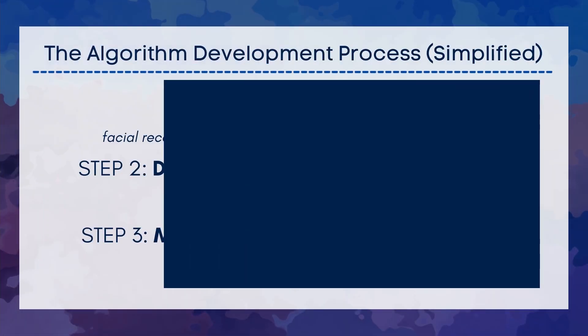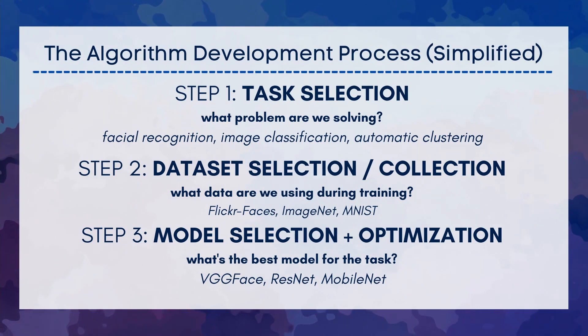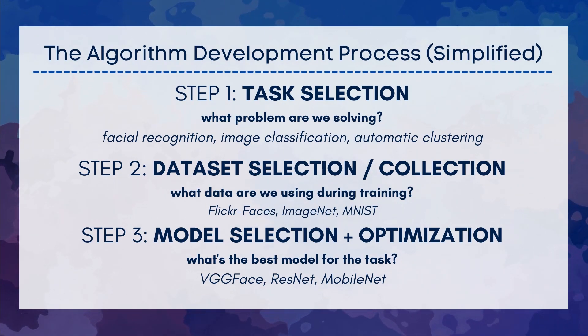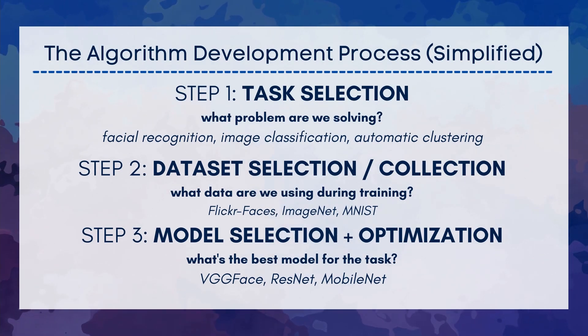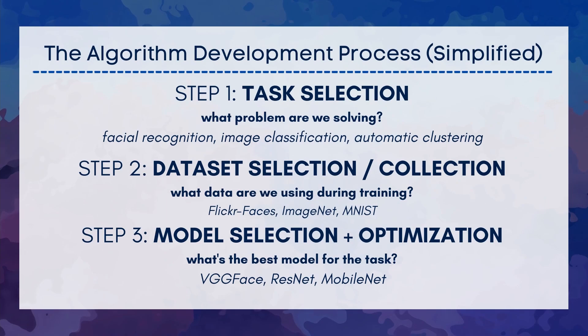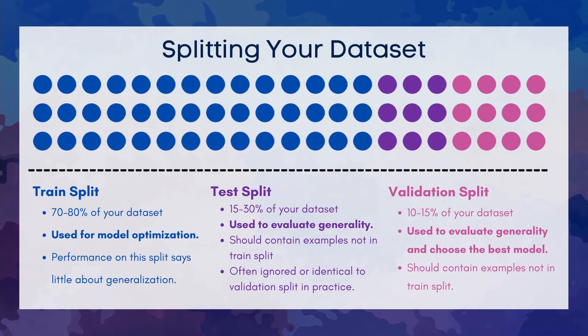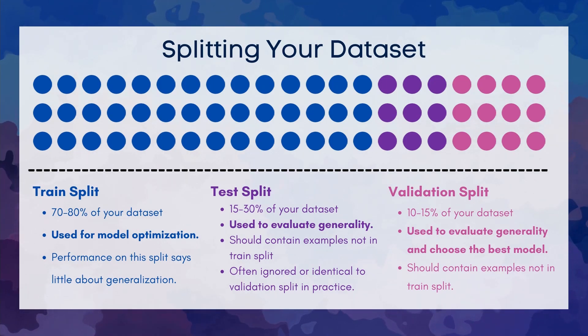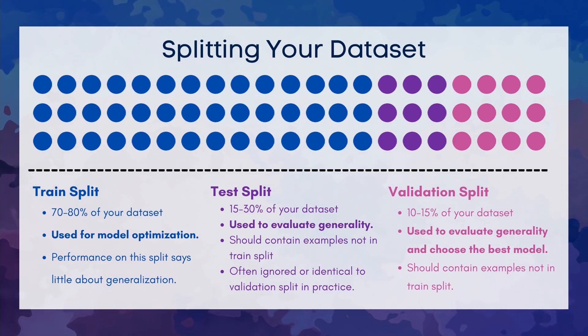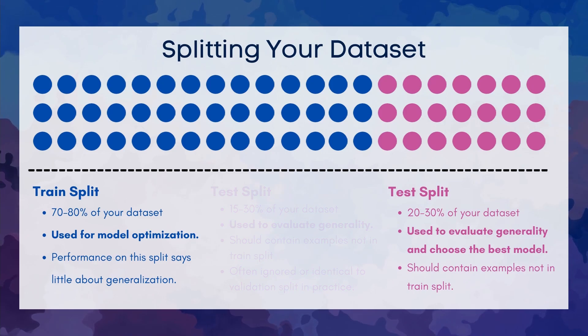Before we get too deep, let's briefly discuss how artificial intelligence algorithm development works. First, we figure out what our task is, then what our input data is and whether we need to annotate or collect another data set, and we also need to figure out what our model is going to be. Then we optimize our model. During optimization, we typically split our data into three categories: training data, test data, and validation data. Training data is the largest portion used to directly optimize your model. Test data is used to evaluate your model in a general situation it didn't actually see. Validation data is used for hyperparameter tuning, though some people don't really use validation data sets.